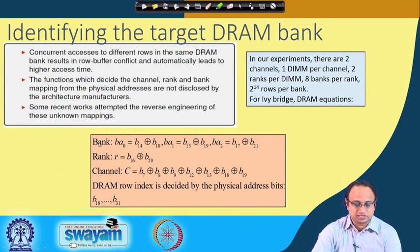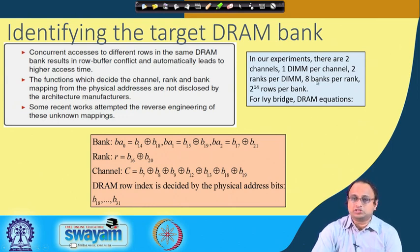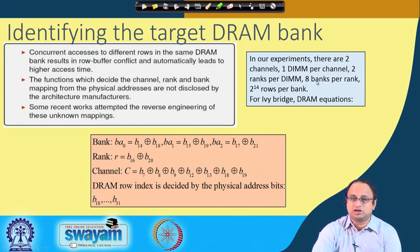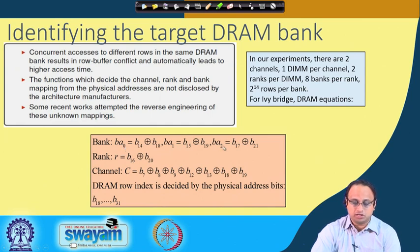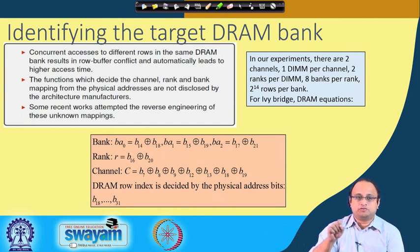From the physical address, these equations give you the bank number, rank number, and channel number. In our experiment there are two channels, one DIMM per channel, two ranks per DIMM, and eight banks per rank. Since there are eight banks, three bits — BA0, BA1, and BA2 — are needed. If you know the physical address, you can calculate BA0, BA1, and BA2 and determine the corresponding bank numbers for those physical addresses.